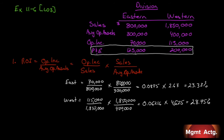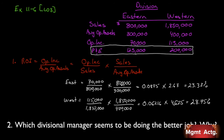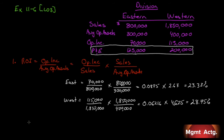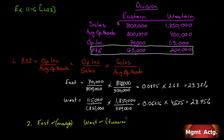Number two asks: which divisional manager seems to be doing the better job and why? Breaking it down — on margin, the East wins, achieving a better operating income margin. On turnover, the West wins with a ratio of 4.67. But for overall ROI, it goes to the West, primarily because of their superior turnover.